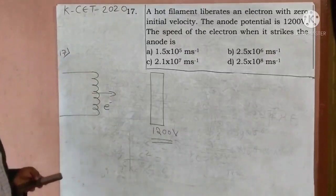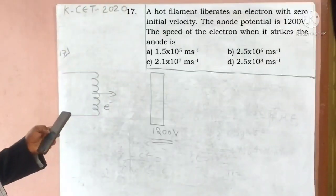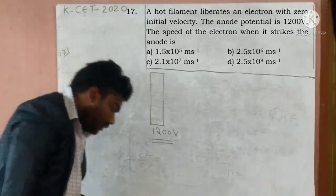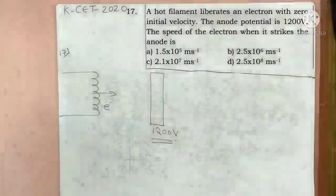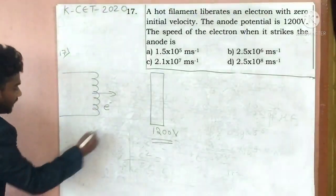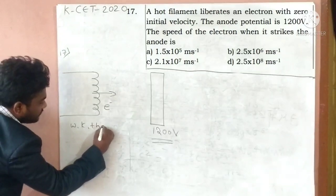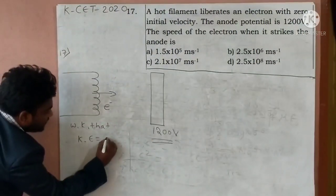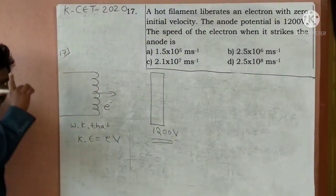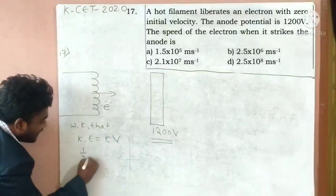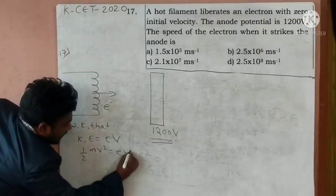Now, in calculation, the speed of the electron when it strikes the anode is - speed in the calculation. We know that kinetic energy is equal to EV. Remember? Very good. Half mv square is equal to E into V.